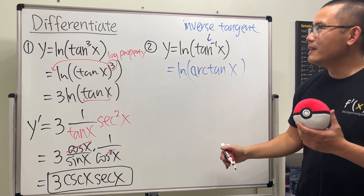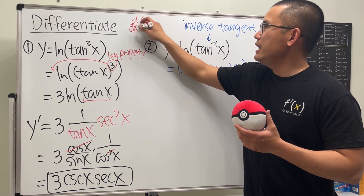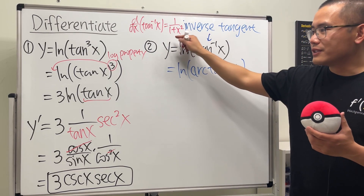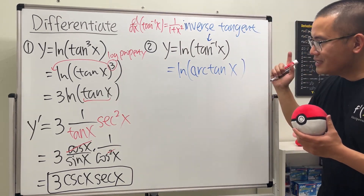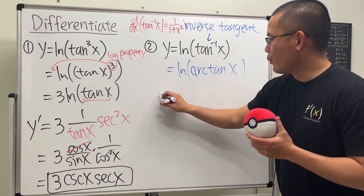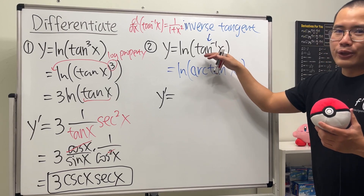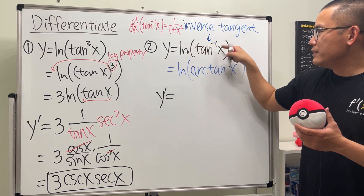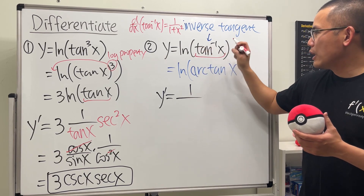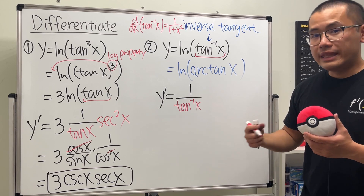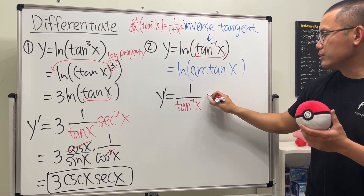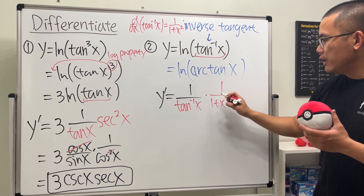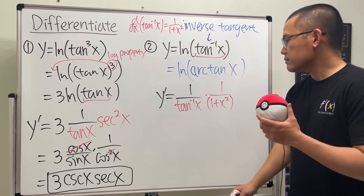Keep in mind this is the inverse tangent function. Remember that differentiating arctan(x) gives 1 over (1 + x²) — very different from differentiating regular tangent. Now let's do the derivative. y prime: differentiating ln of arctan(x) gives 1 over arctan(x), then by the chain rule we multiply by the derivative of arctan(x), which is 1 over (1 + x²).